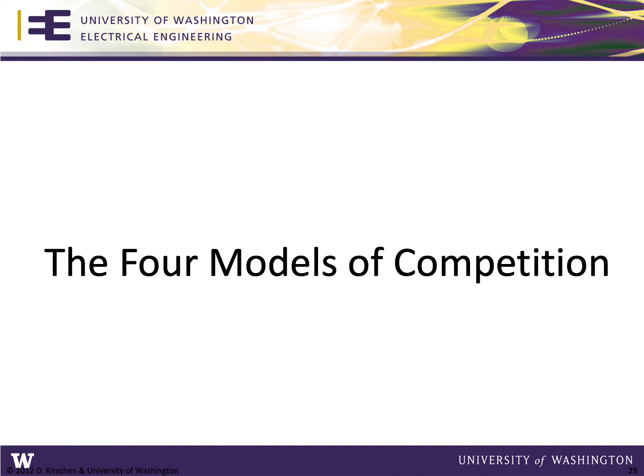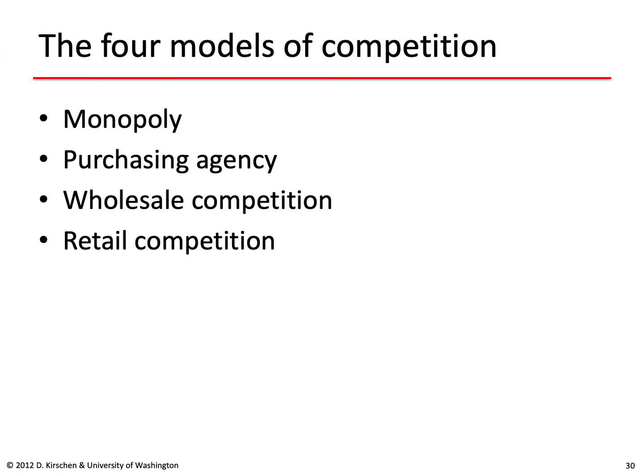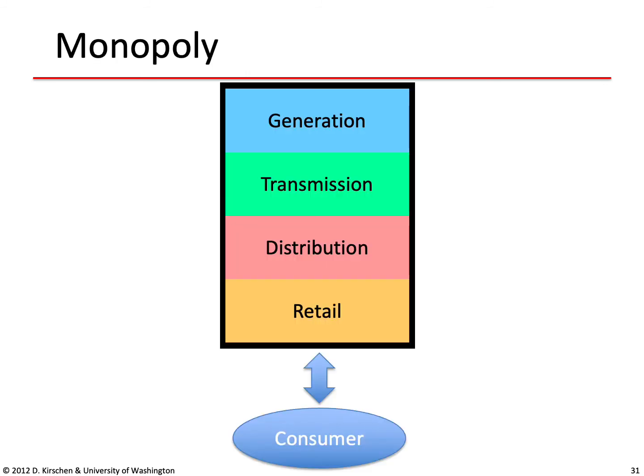Let's now consider how these various roles can be organized into four models of competition: monopoly, purchasing agency, wholesale competition, and retail competition. The monopoly model is the traditional model where a single entity does generation, transmission, distribution, and retail, and the consumer has no choice. We will use the monopoly model simply as a reference to compare against the other possible models.